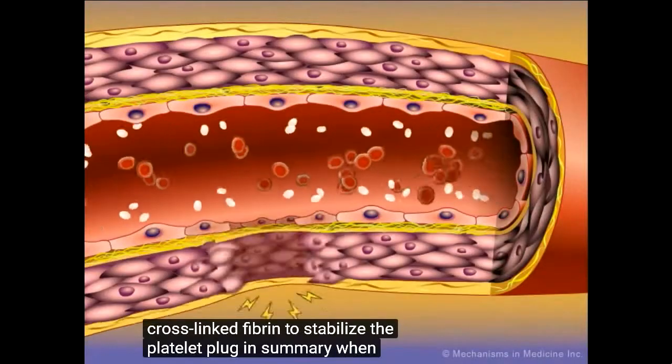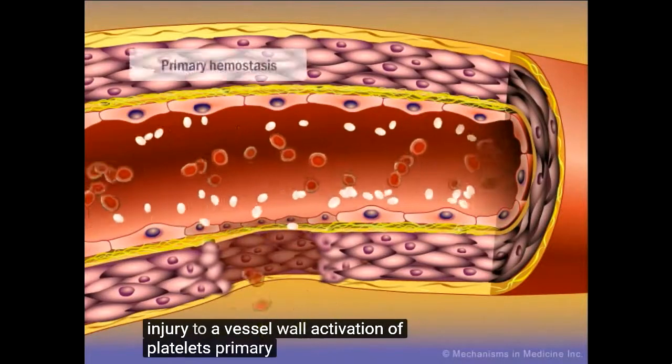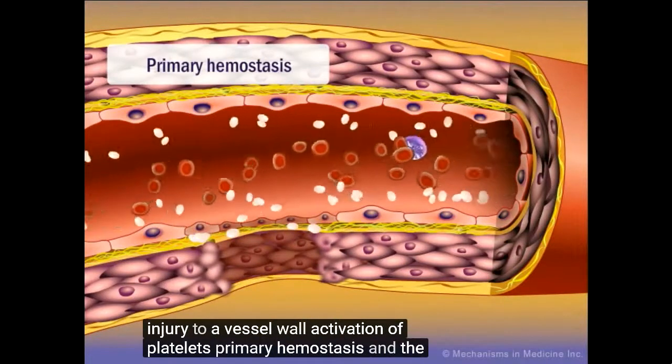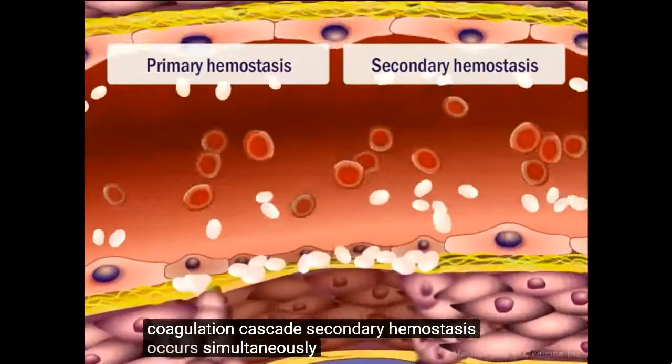In summary, when there is injury to a vessel wall, activation of platelets, primary hemostasis, and the coagulation cascade, secondary hemostasis, occur simultaneously.